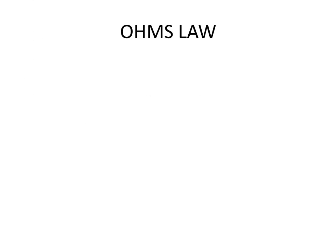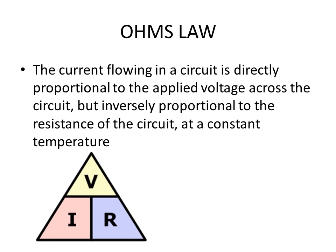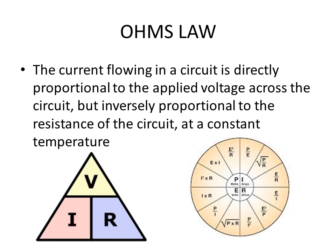Ohm's law and the relationship between volts, current and resistance. The current flowing in a circuit is directly proportional to the applied voltage across the circuit but inversely proportional to the resistance of the circuit at a constant temperature. Therefore I equals V divided by R, or V equals I times R, or finally R equals V divided by I. Other relationships can also flow from this one as indicated by the following diagram.